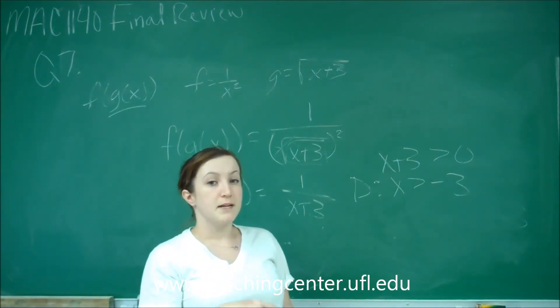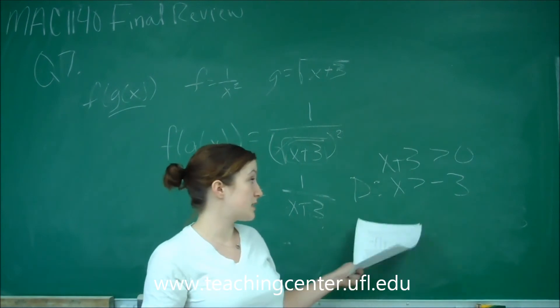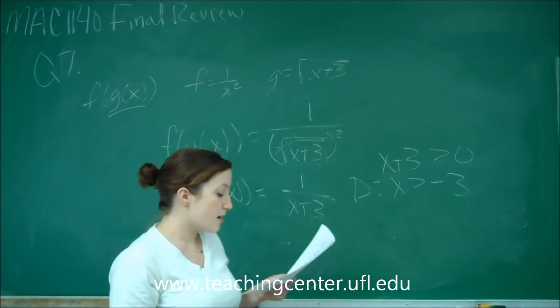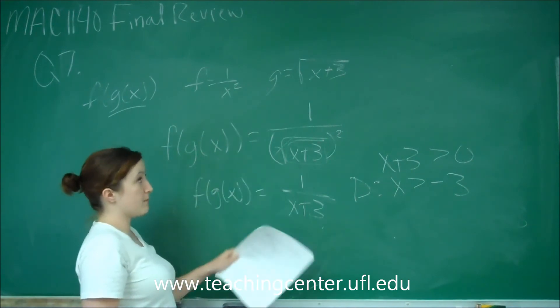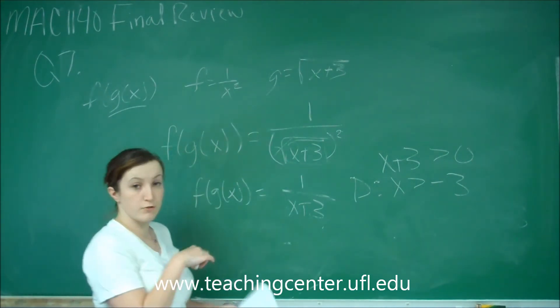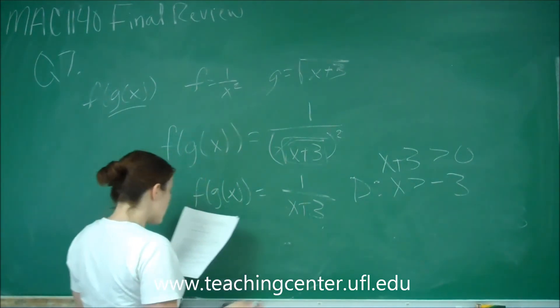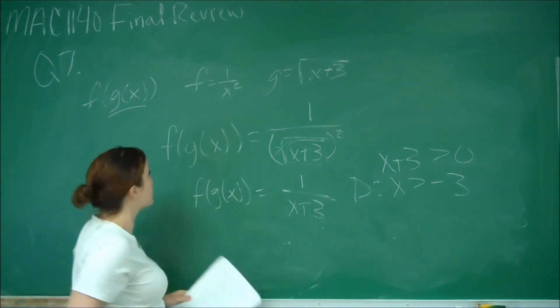But because it's a composite function, x can't also equal anything less than negative 3. So that's why you always plug in g of x first, but then you have to find the domain before you do anything to it. And so, that's the answer for this question.